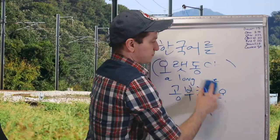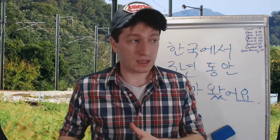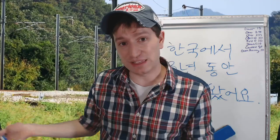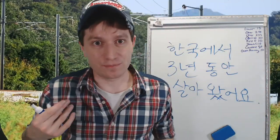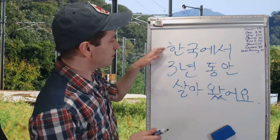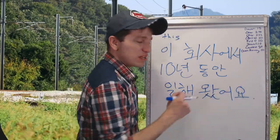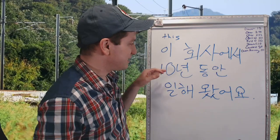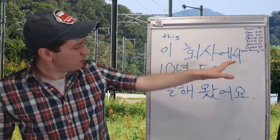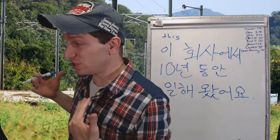한국에서 십 년 동안 살아왔어요 — I have been living in Korea for ten years, from the past, continually up until now. Instead of just 살았어요 — 'I lived in Korea for three years' — 살아왔어요 emphasizes the continuity up to now. 이 회사에서 십 년 동안 일해왔어요 — I have been working at this company for 10 years, from the past up until today.